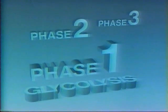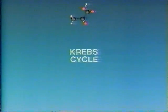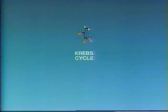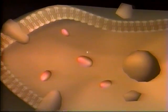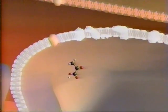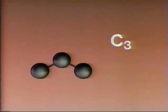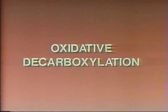In the second phase of cellular respiration, the Krebs cycle, more energy is released by metabolizing pyruvate. The Krebs cycle was named after British biochemist Hans Krebs, who traced pyruvate beyond glycolysis. Inside the cell, pyruvate moves from the cytosol through both mitochondrial membranes into the matrix. Here in the matrix, the Krebs cycle takes place.